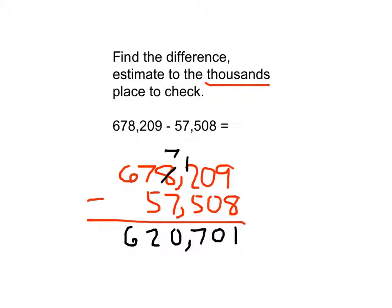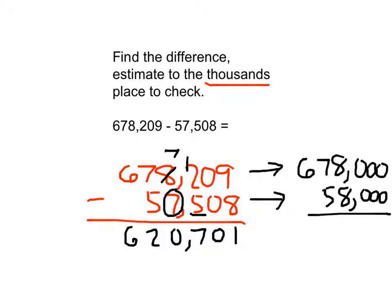So my exact answer is 620,701. My estimate to check it says to go to the thousands place to check. So 678,209 rounds to 678,000. 57,508 goes to 58,000. Some people need to circle and underline. Do those steps that you need to do to get the problem correct. 8 minus 8 is 0. 7 minus 5 is 2. And that 6 comes straight down there. So 620,701. 620,000 is my estimate. And they're close to each other. So I think that my answer is correct. I actually increased this, which is the number that I'm taking away, and brought what it is that I'm taking away from down. So it makes sense that the 620,000 is what it is.